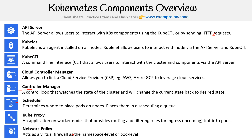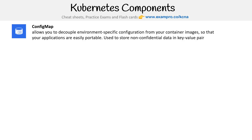Network policies put restrictions around how pods or namespaces can communicate with each other, because by default everything can just talk to everything within a cluster. Then you have config maps, which allow you to decouple environment-specific configuration from your container images so that your applications are easily portable. Config maps are used to store non-confidential data in key-value pairs — just application configuration details.